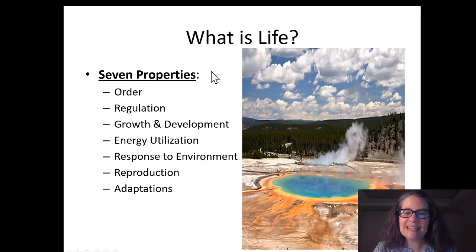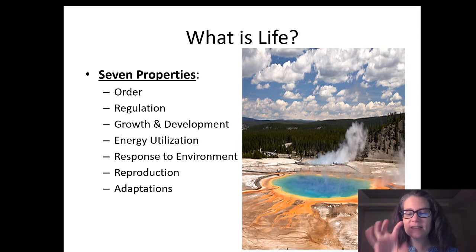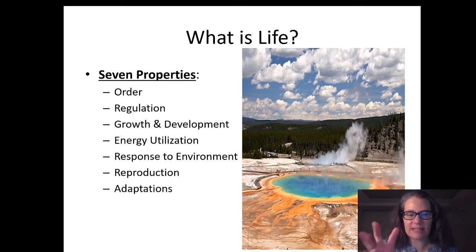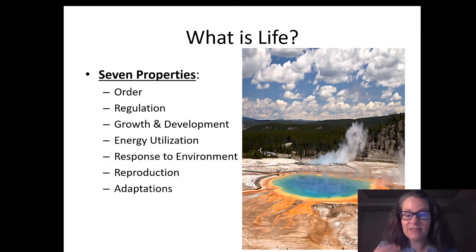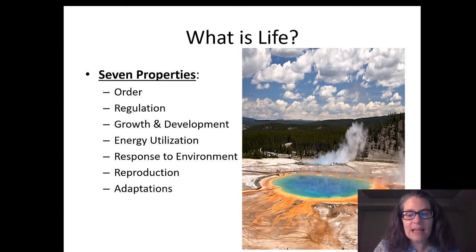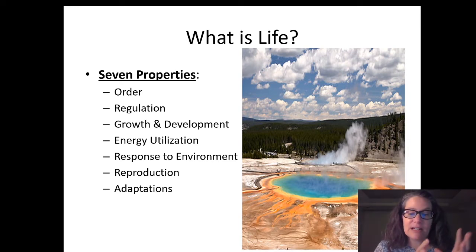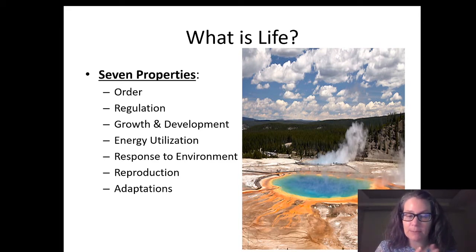So biology is the scientific study, but the second part of that definition is 'of life.' What constitutes the characteristics or properties that make something living versus non-living? We say there are seven different properties that living things have that non-living things do not. The first is that living things have order — they are organized in usually complicated patterns of one or more cells. Cells are going to be our basic unit of life, the simplest thing we can pull from a living thing that carries out these seven properties.